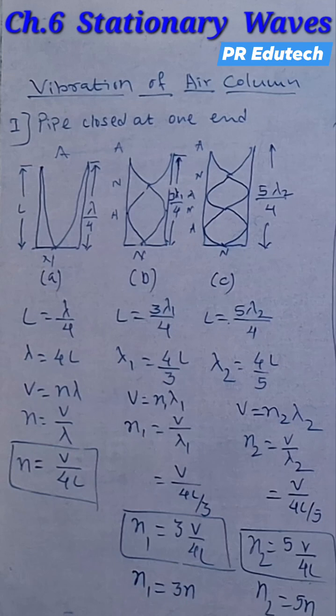Therefore length of the tube is equal to 3 times lambda 1 by 4. And in the third case you will be able to see there are 2 and a half loops. Therefore length of the tube is equal to 5 times lambda 2 by 4. Now we know V is equal to n lambda.